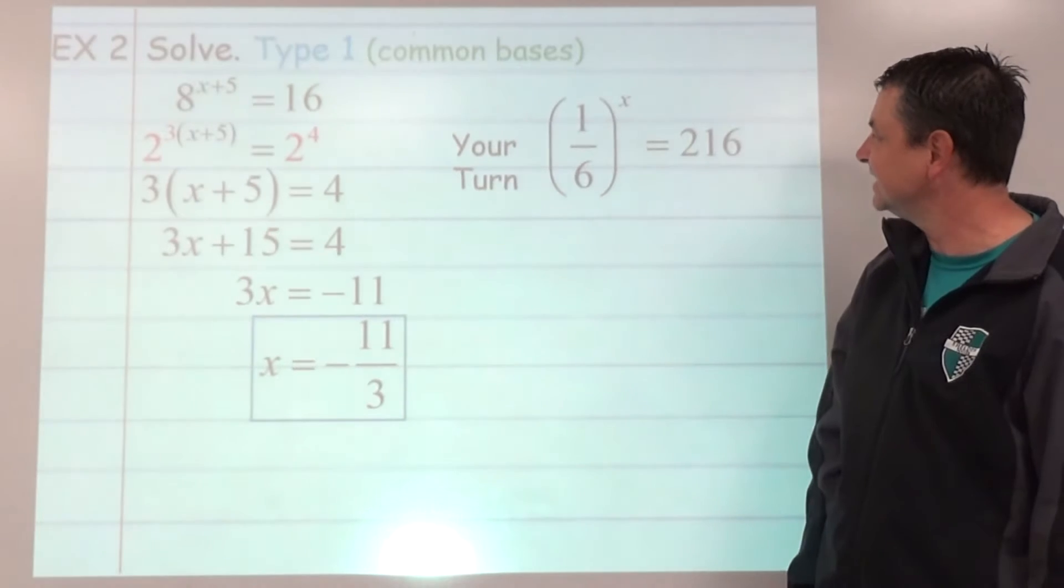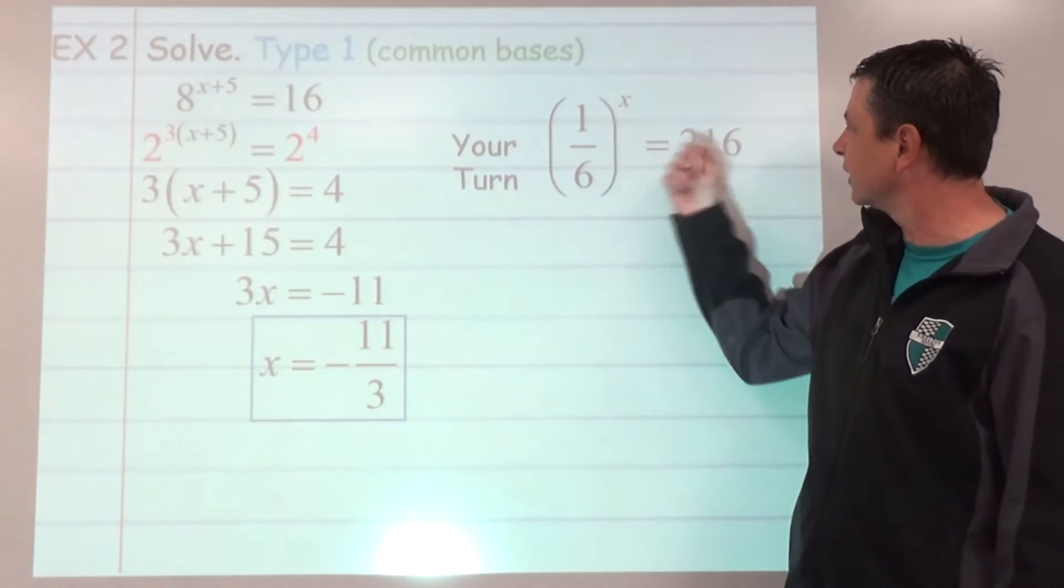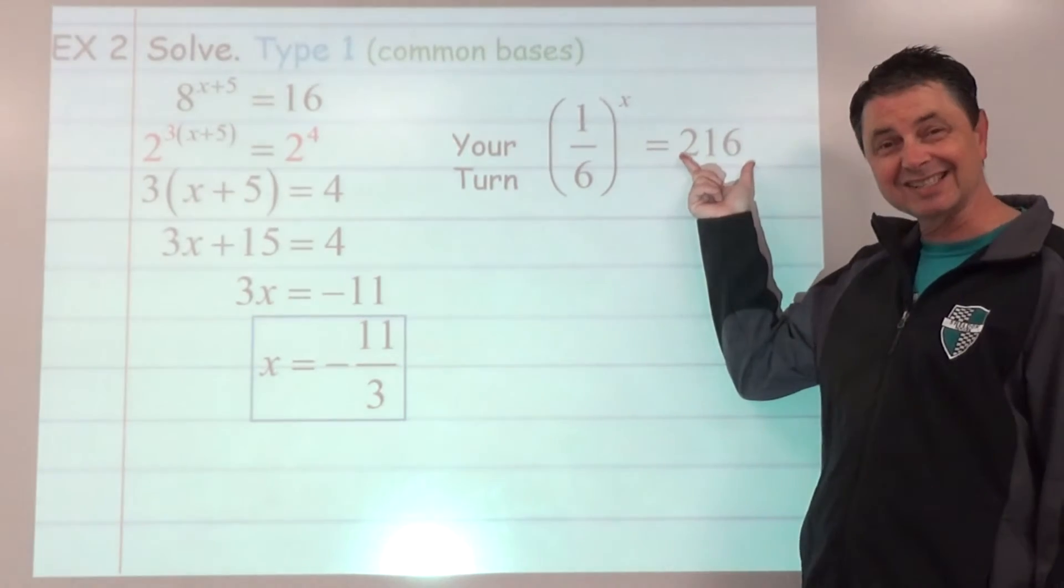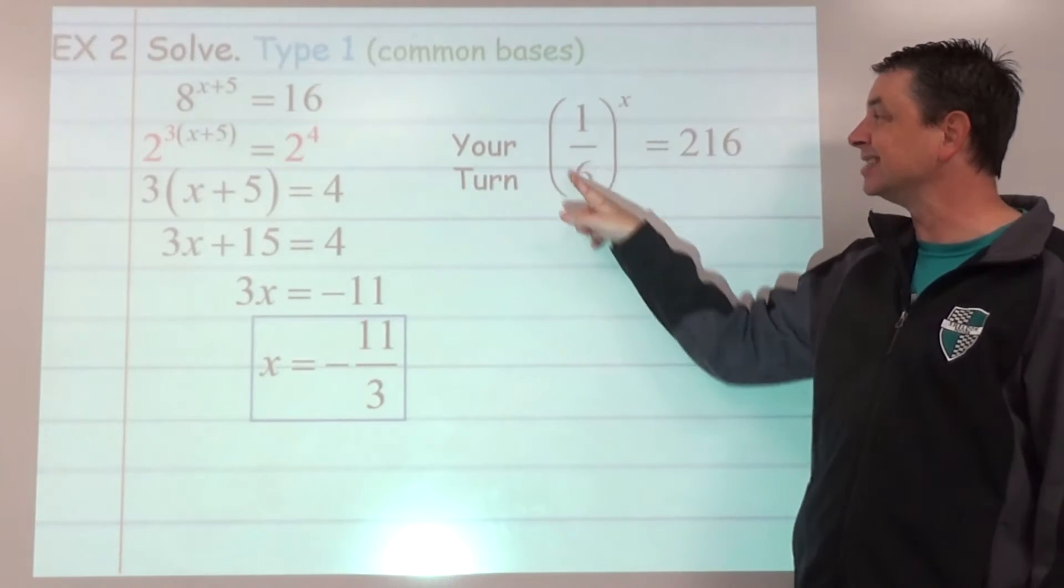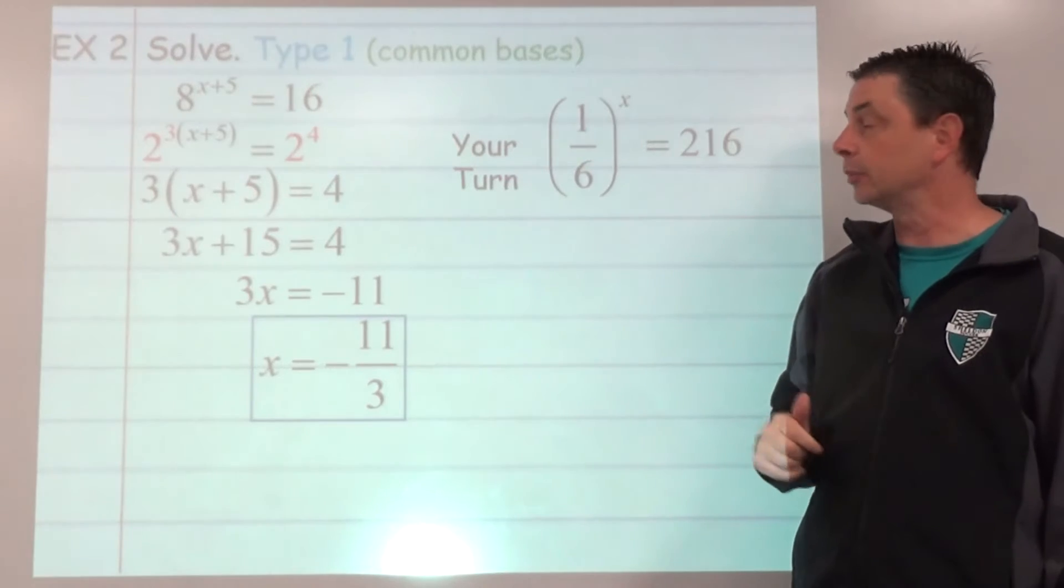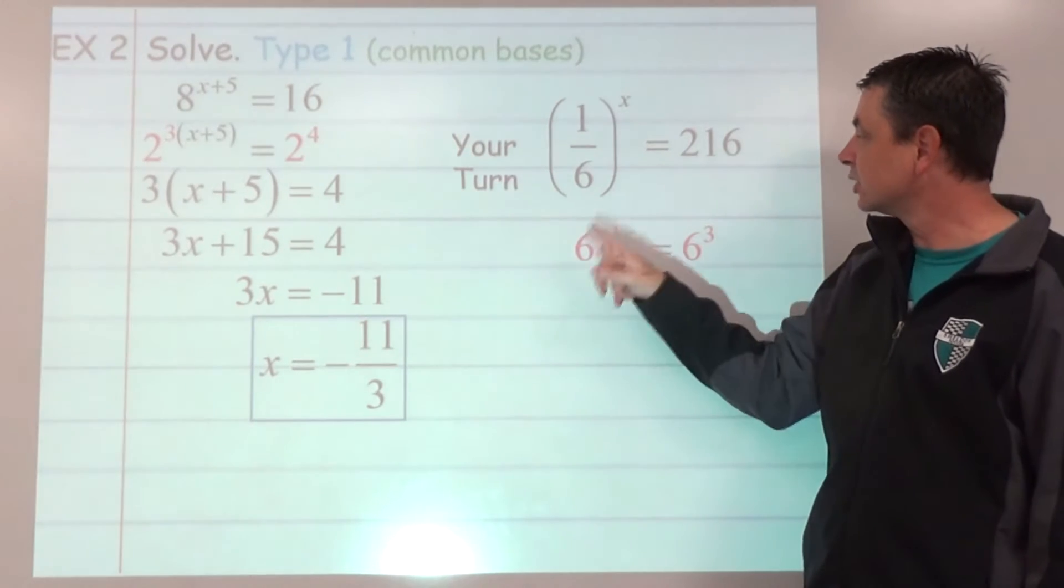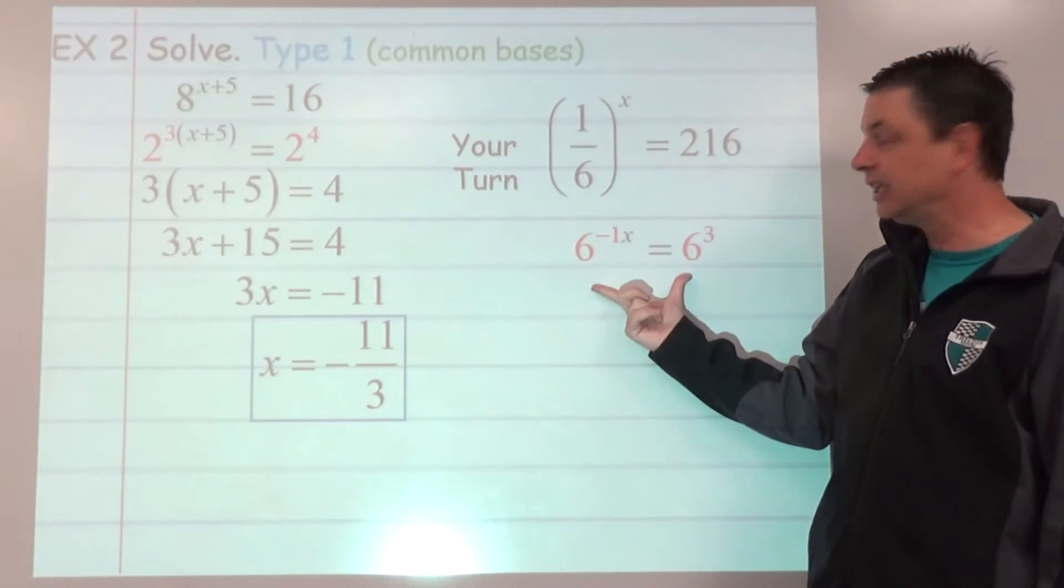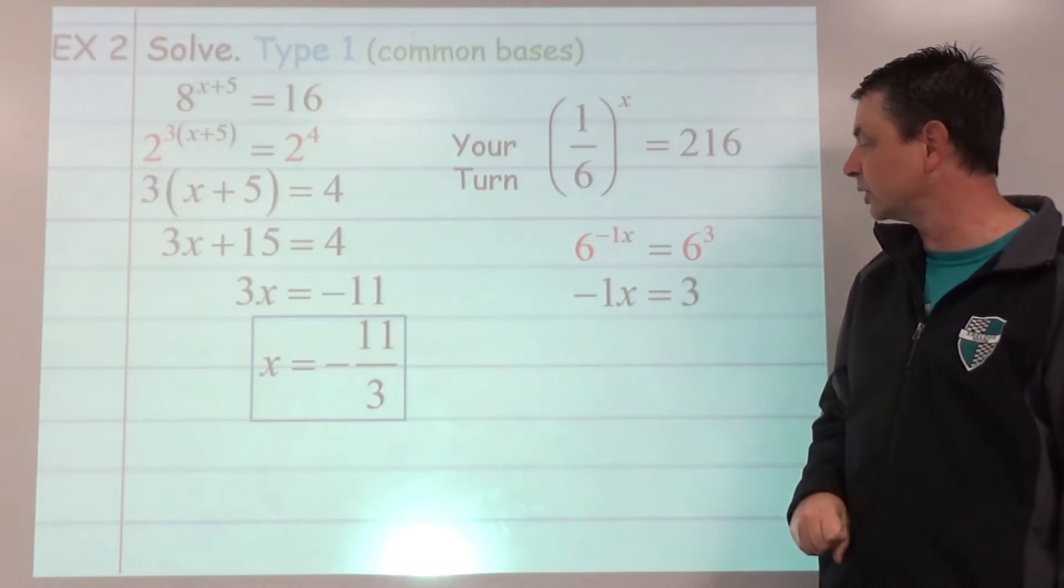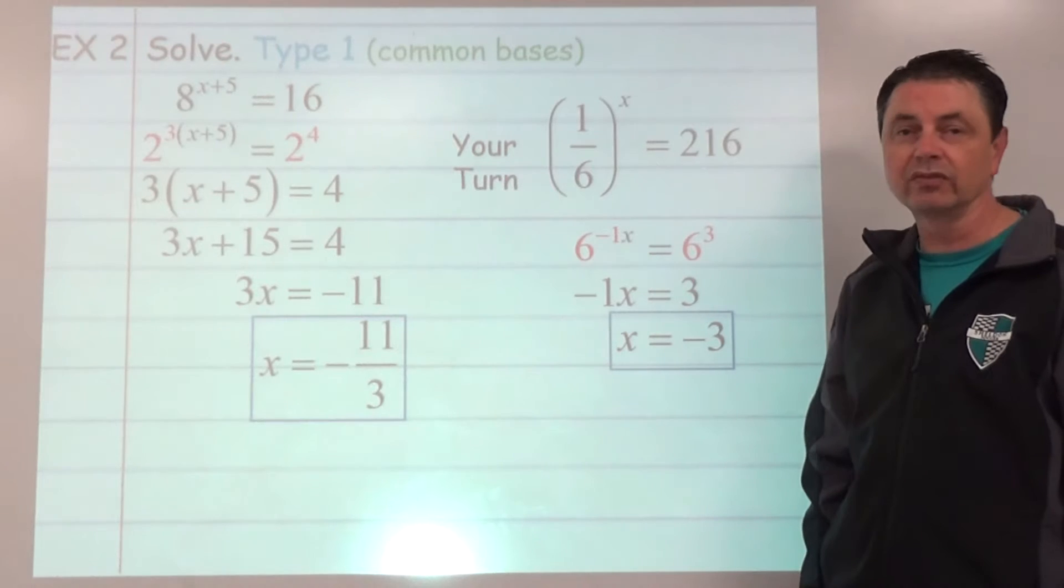All right, see how you did. This one's a little trickier in that we have to figure out our common base, and it is 6. So 216 is 6 to the third power, 1 sixth is 6 to the negative 1 using the negative exponent property. So 6 to the negative 1 times x means when we equate the exponents, negative 1x equals 3. Divide both sides by negative 1, x equals negative 3.